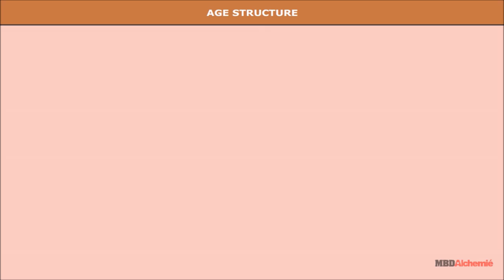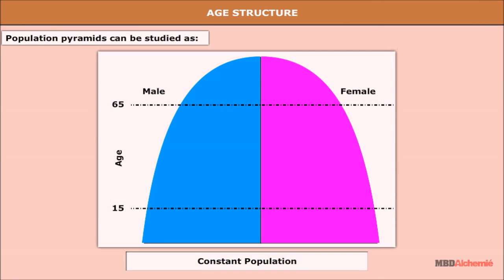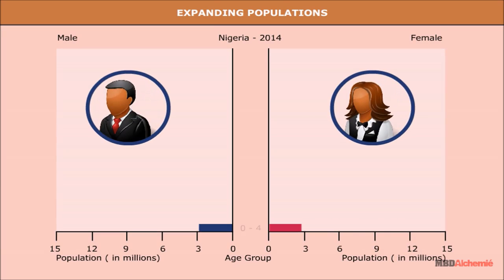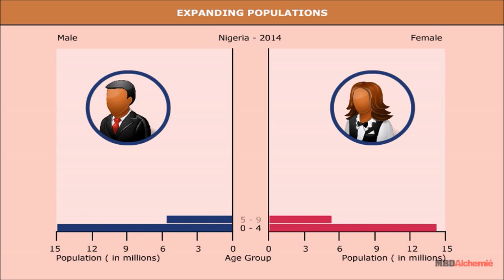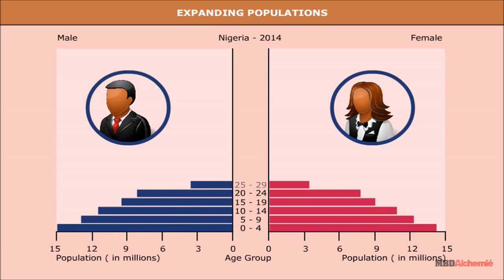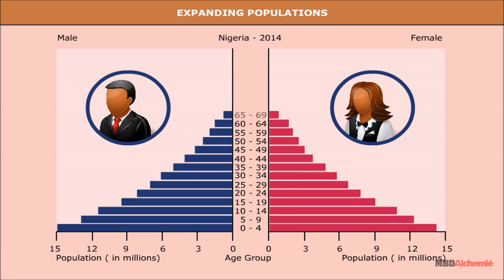Population pyramids can be studied as expanding populations, constant populations, and declining populations. The age-sex pyramid of Nigeria is a triangular-shaped pyramid with a wide base and is typical of less developed countries. These have larger populations in lower age groups due to high birth rates.